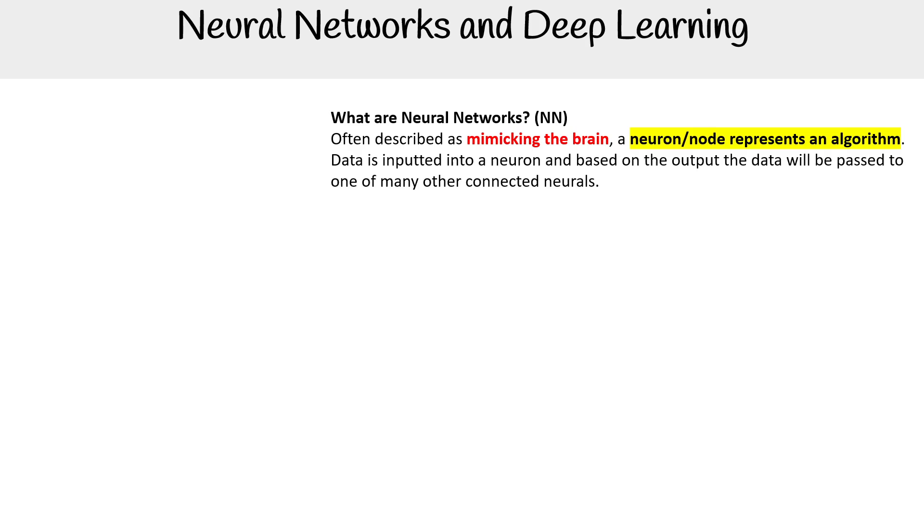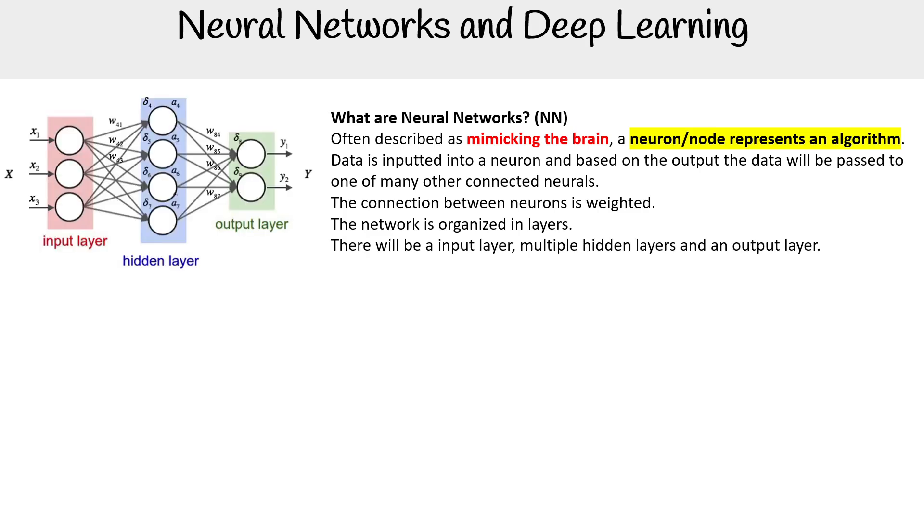Let's take a look at neural networks and deep learning, first defining what are neural networks. These are often described as mimicking the brain. You have a neuron or node that represents an algorithm. The data is inputted into the neuron, and based on the output, the data will be passed to one of the many connected neurons. The connections between neurons are weighted. The network is organized into layers. There will be an input layer, multiple hidden layers, and an output layer.